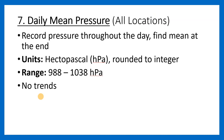The seventh measurement is daily mean pressure, and again this is for all locations. They record pressure all throughout the day and then find the mean at the end. This is given in hectopascals and rounded to the nearest integer. The range is between 988 and 1038 — the ranges are important, as they have actually asked an exam question specifically on this range for daily mean pressure. I don't think there are any trends here; it's just random.